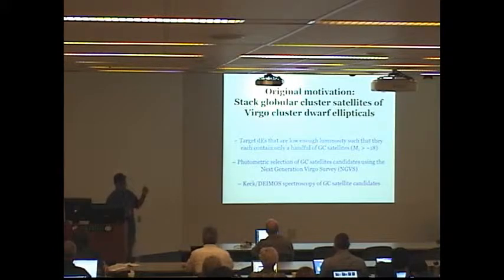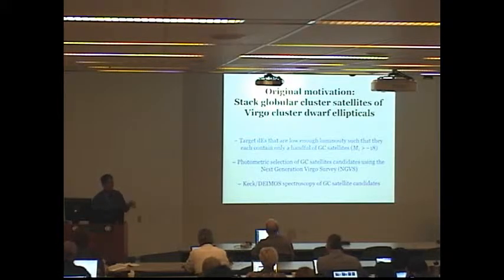We targeted dwarf ellipticals in the Virgo cluster that have low enough luminosity that each one is expected to contain only a handful of globular cluster satellites. There is naturally a well-defined relationship between the number of globular clusters a galaxy contains and its luminosity. We selected these satellites using the NGVS, the next generation Virgo cluster survey.